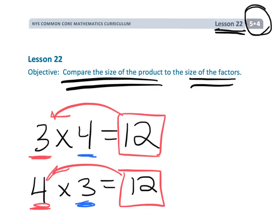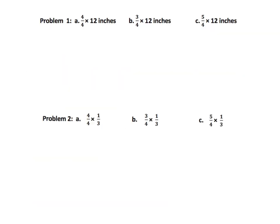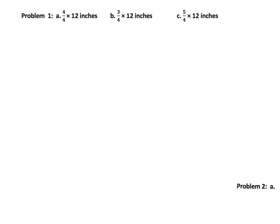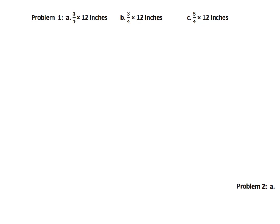So now I hope I've got your interest piqued. Let's get going. I've got a couple of problems here. I've got 4 fourths times 12 — in other words, 1 times 12. Then I've got 3 fourths times 12, and then I've got 5 fourths times 12. The 12 is all the same. The difference is here I'm multiplying by 1, here I'm multiplying by less than 1, and here I'm multiplying by greater than 1.